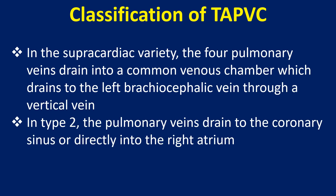In the supracardiac variety, the four pulmonary veins drain into a common venous chamber which drains to the left brachiocephalic vein through a vertical vein.